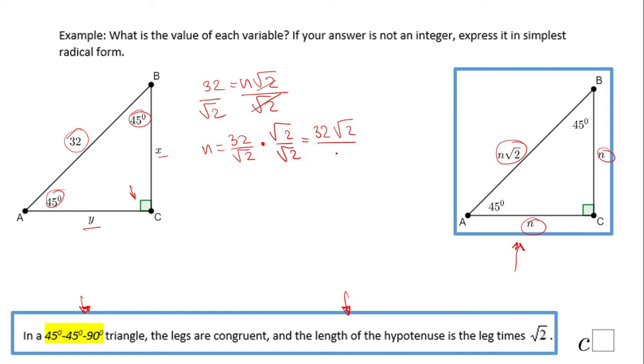And the last thing we can do is to simplify. 2 goes into 32 sixteen times, so we have 16 square root of 2. So that is the n, which is, in our case, the x and the y.